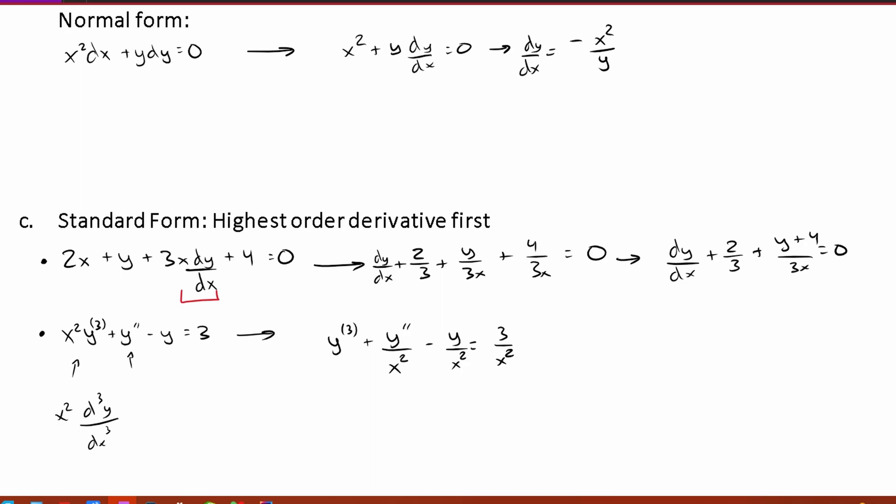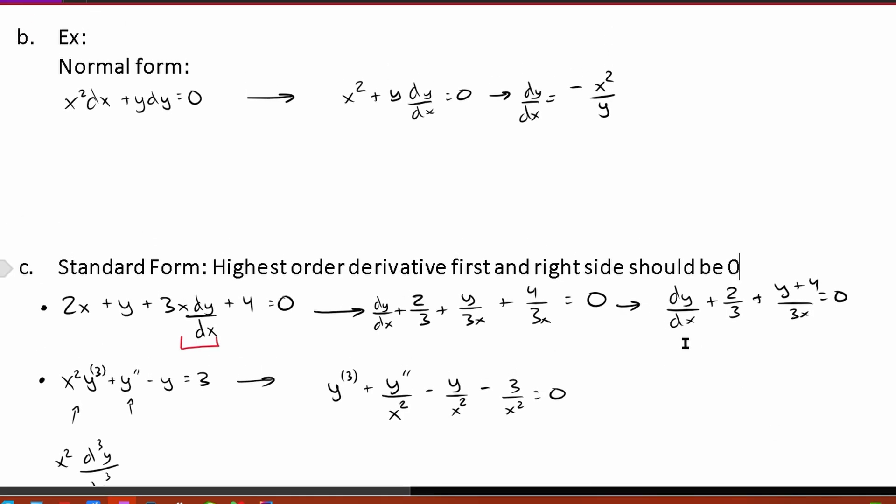One important part though before we get to the end of this video. We want our standard form to be all on one side. Negative 3 over x squared should be equal to 0. That's an important part. Standard form highest order derivative first and right side should be 0. So that's our standard form.